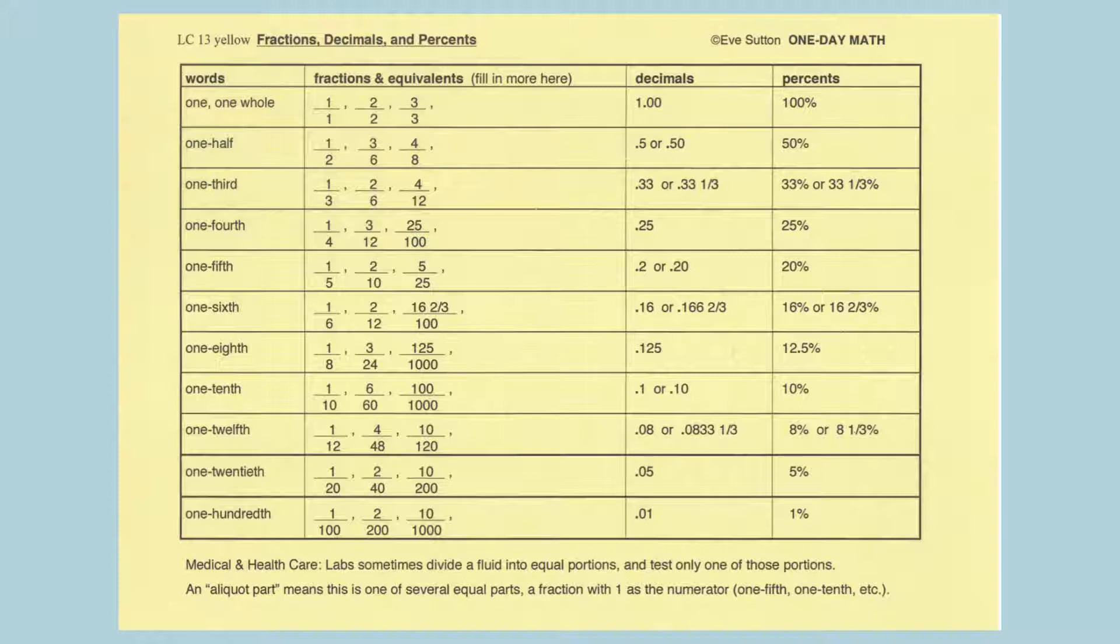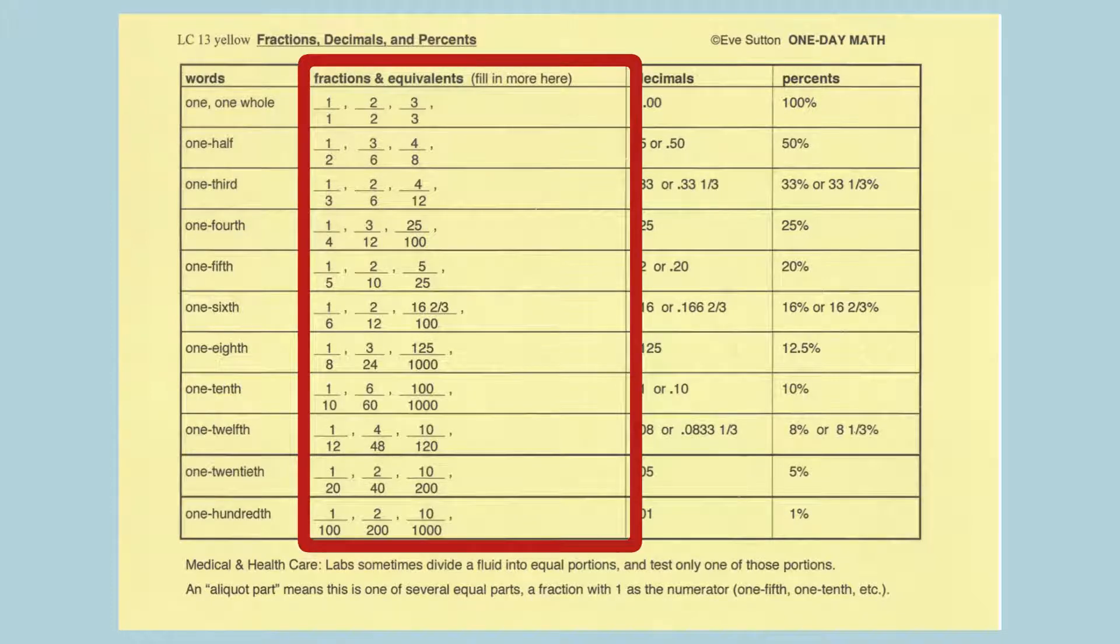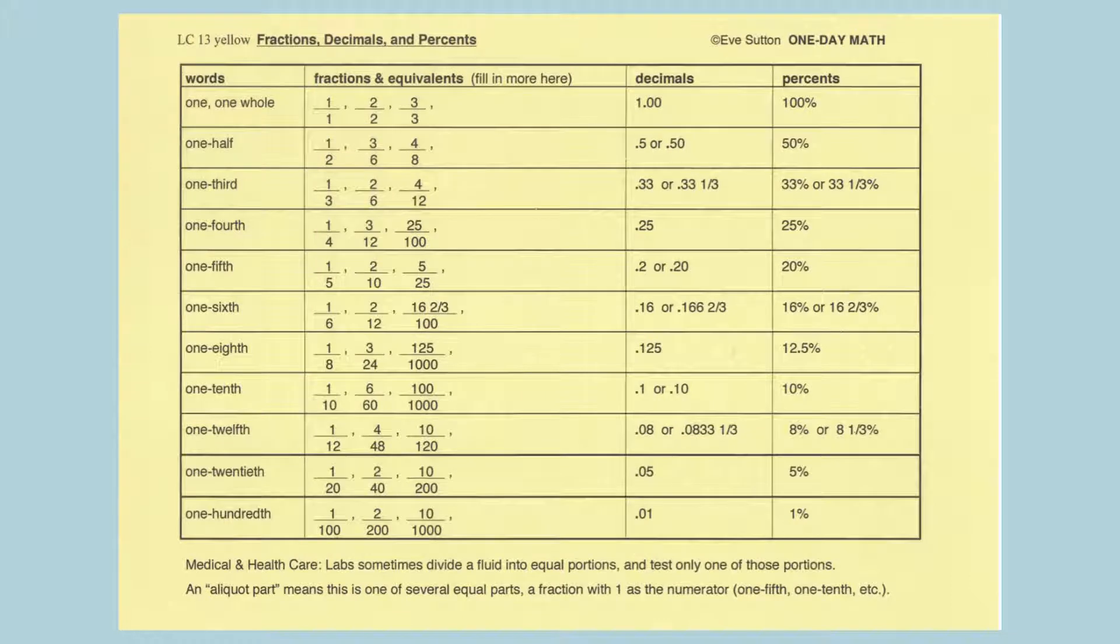When the number is written as a numerator and denominator, the horizontal bar can be read as divided by or out of. For example, all these expressions are equal to one-half: three-sixths, three-divided-by-six, and three-out-of-six.